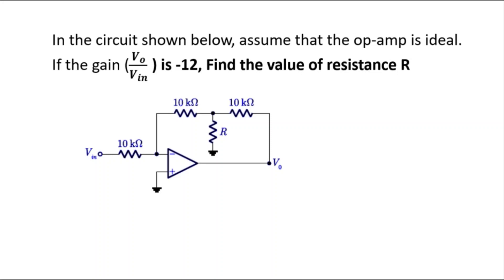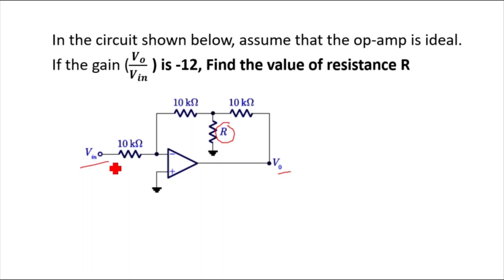In the circuit shown below, assume that the op-amp is ideal. If the gain V_out by V_in is minus 12, find the value of resistance R. We need to find this resistance value R. The other resistances shown are 10K, 10K, and 10K. We just need to find the value of R for this gain.